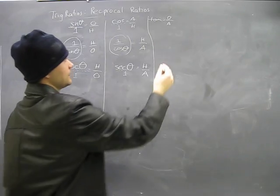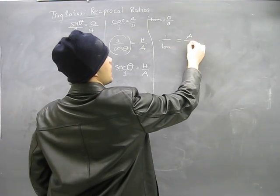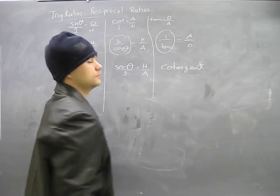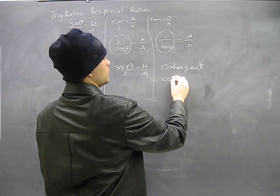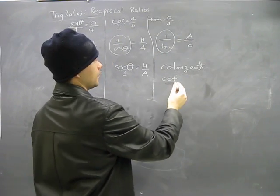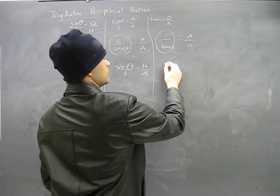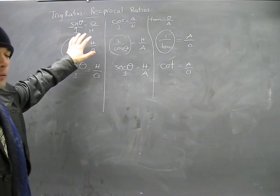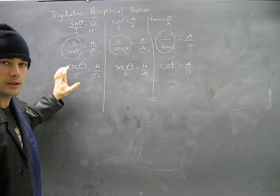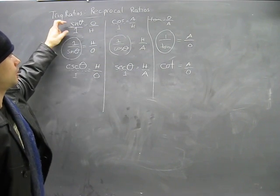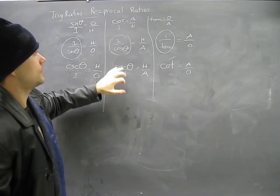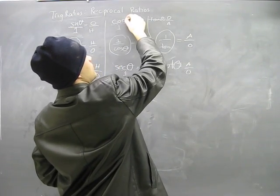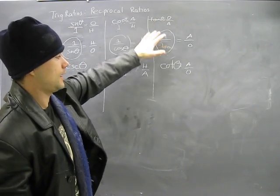And the third one here, of course, I'm sure you probably get the idea. One over tan will equal adjacent over opposite. This has its own name. It's called cotangent. We have a shortcut for it. We call it cotan. You can just call it cotan for short. What you get is cotan equals A over O. So we have our three main trig ratios, and then we have our three reciprocal ratios. Cosecant is the opposite of, or the reciprocal of sine. Secant theta is the reciprocal of cosine. And cotan is the reciprocal of tangent.